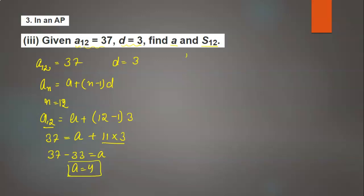Now next we need to find S12. The formula for sum of n terms is n/2 times (a + an). So S12 = 12/2 times (4 + 37).